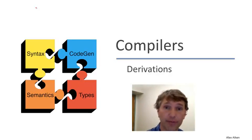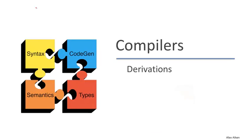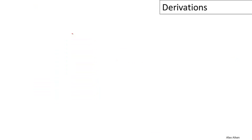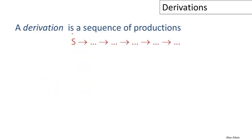In this video, we're going to continue our discussion of parsing with the idea of a derivation. A derivation is a sequence of productions. Beginning with the start symbol, we can apply productions one at a time in sequence, and that produces a derivation.